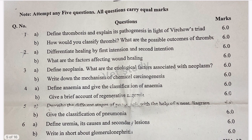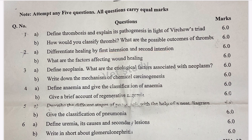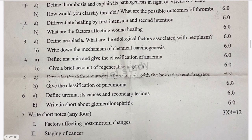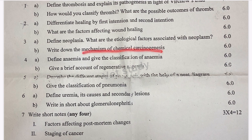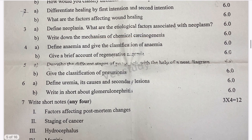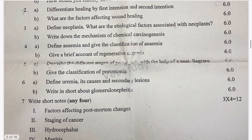We are asked about wound healing — first intention and second intention. Wound healing is a very important topic. We have also been asked about neoplasia, its etiological factors, mechanism of action of chemical carcinogenesis. Besides, anemia is a very important topic — regenerative anemia and classification of anemia.